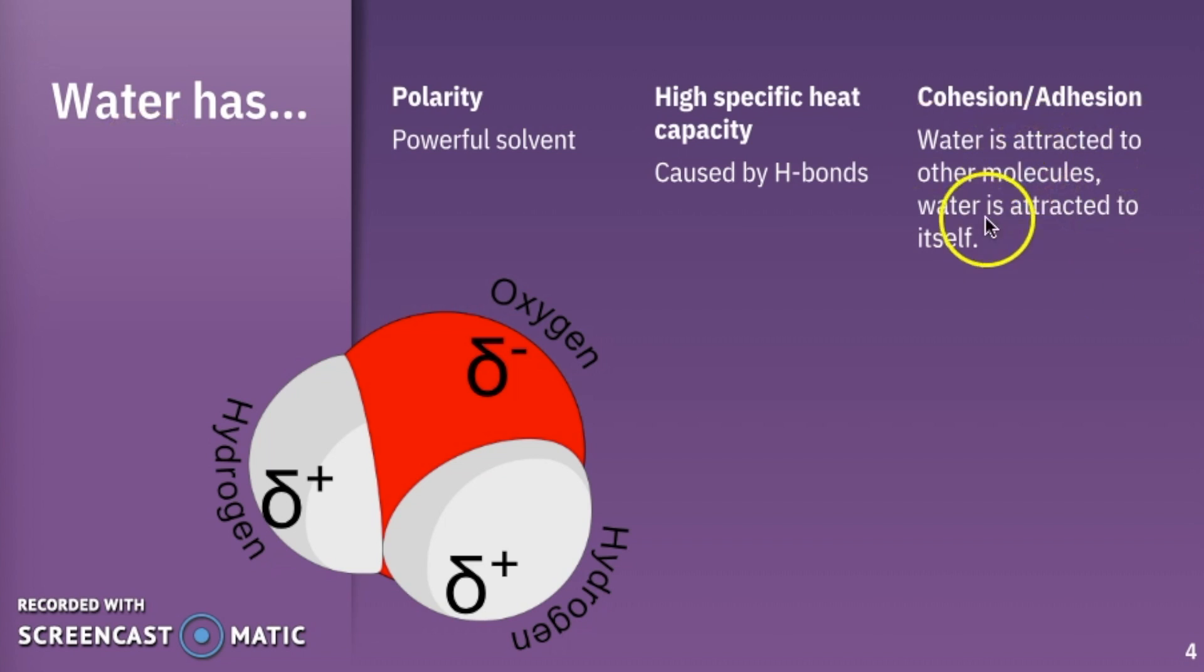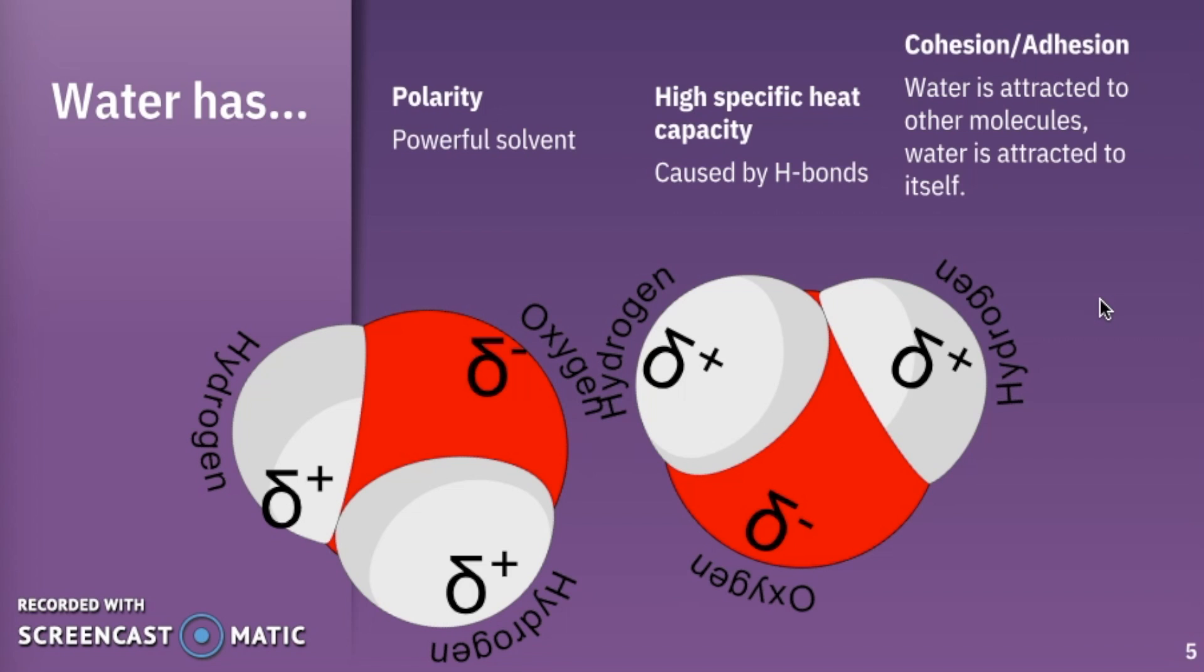Water also has cohesion and adhesion, so water of course is attracted to other molecules and water is attracted to itself, and this is because again of the hydrogen bonds that are formed. So the attraction between the oxygen of one water molecule and the hydrogen of an adjacent water molecule is going to help with this. We also have a high specific heat capacity, the idea that water is our universal solvent, high heat of vaporization, heat of fusion, and some thermal conductivity as well.